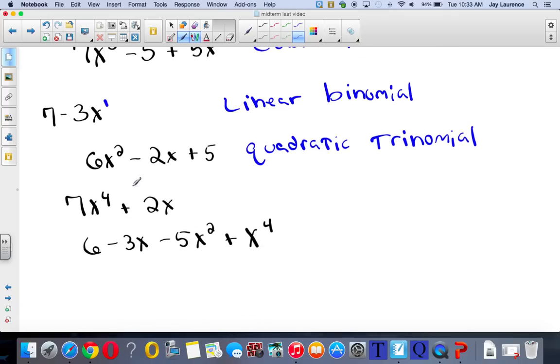All right. This one here, highest power is 4. That makes it quartic. Now, I know some of you get confused with quadratic and quartic. Just think of the quartic as quarters. 4. Okay. And then remember, the other one has to be 2. Okay. 1 is 4. 1 is 2. Quarters is 4. Quartic is 4. Two terms? It's a binomial.